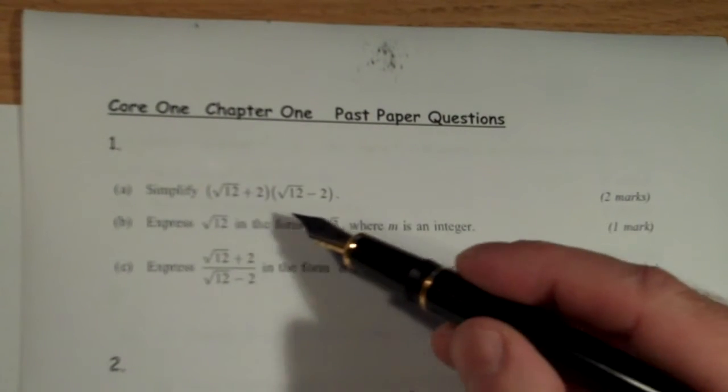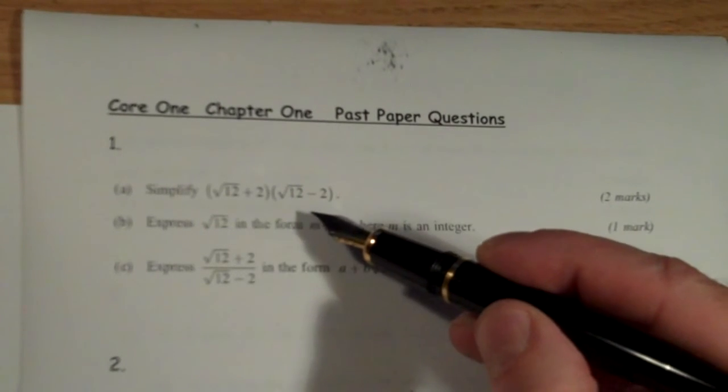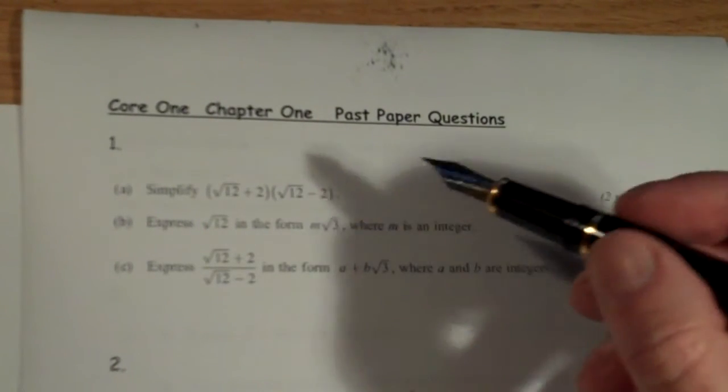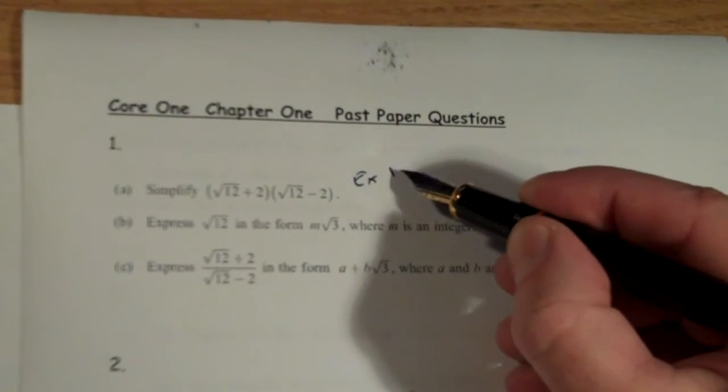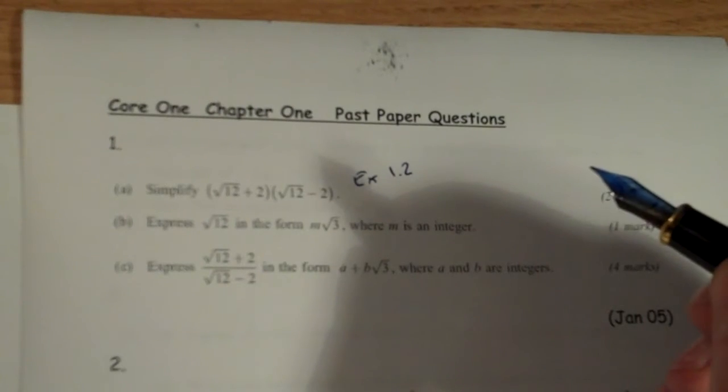So on part A, we've got two brackets with surds in, which we have to multiply out using a grid, and that would be example 1.2 in your chapter 1 booklet on page 2.